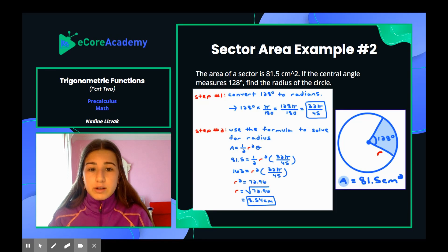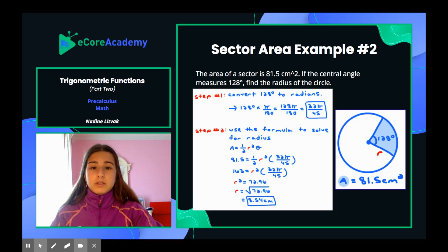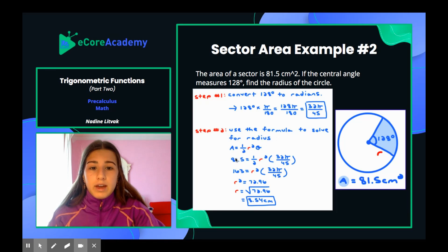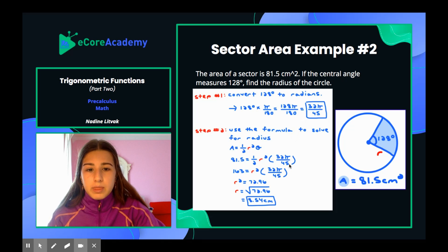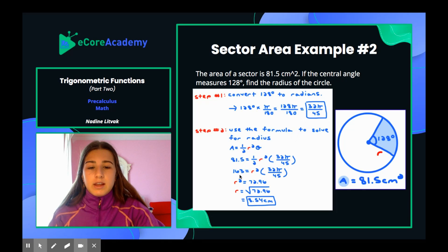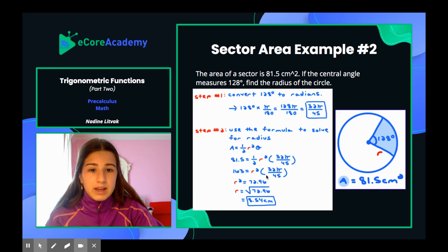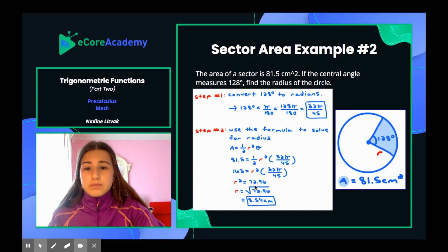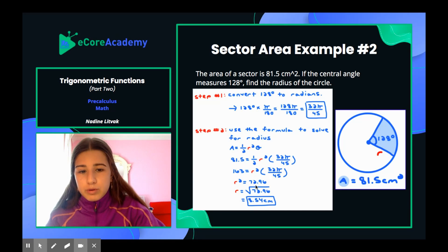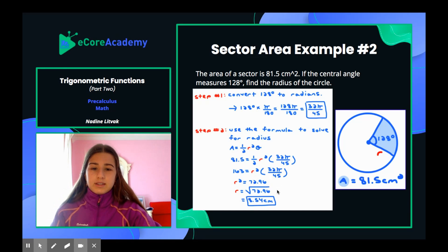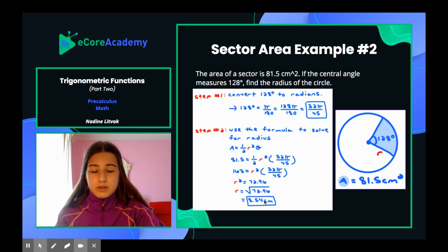Now use the area formula to solve for radius. We know the area is 81.5, so we plug in 81.5 for A, and theta is 32 pi over 45. Multiplying each side by 2 eliminates the one half, giving 163 equals r squared times 32 pi over 45. Then multiply each side by 45 and divide by 32 pi, getting r squared equals 72.96. Taking the square root gives r equals 8.54, and since we're finding radius, the final answer is 8.54 centimeters.